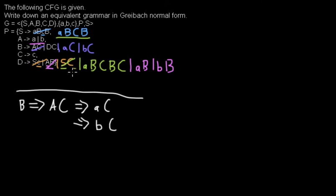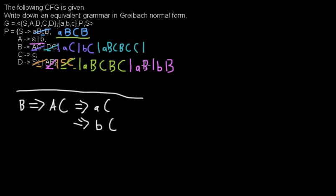The only rule left to handle is the B rules. We can now proceed as before: replace D with every right-hand side of the D rules — those three options. I remove the old rule and add: aBCBC, then aBC followed by C, and bBC followed by C, keeping the C that was already there.